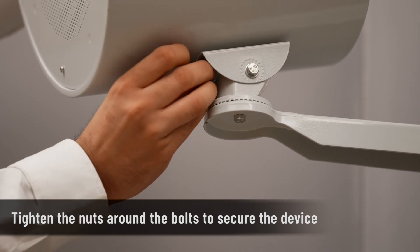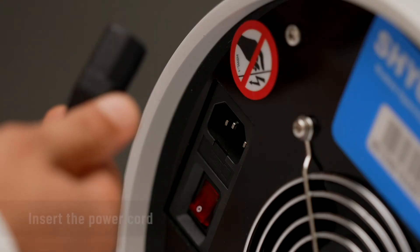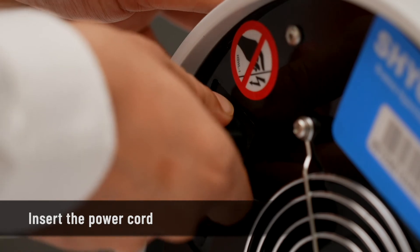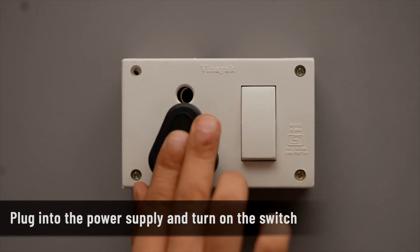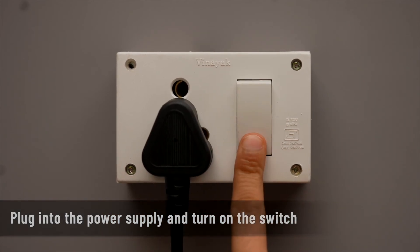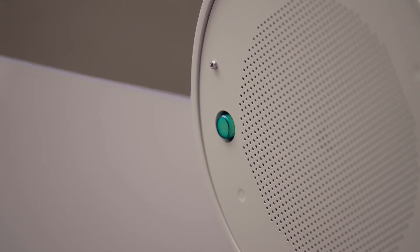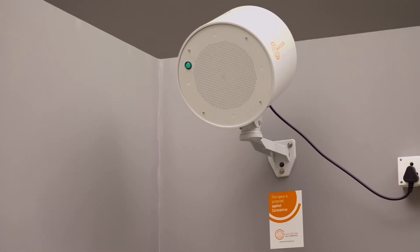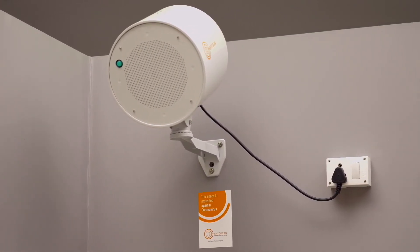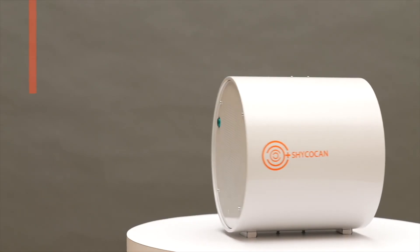Insert one end of the power cord into the socket available on the device's back plate and plug the other end into the power supply. Turn on the switch. The indicator light on the device will glow green and the Shagokan is ready to take on the coronavirus inside your premises and keep you safe.